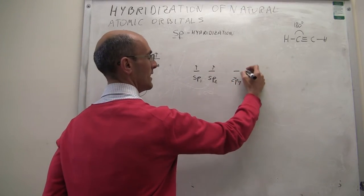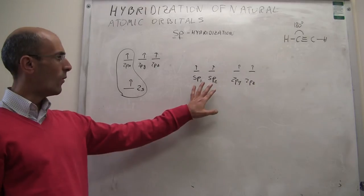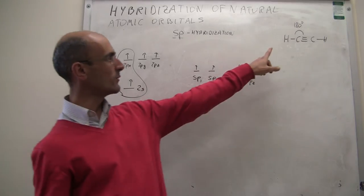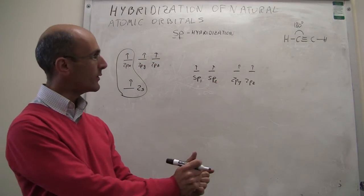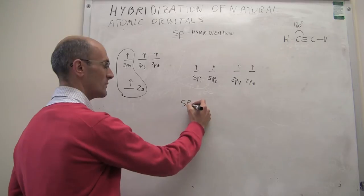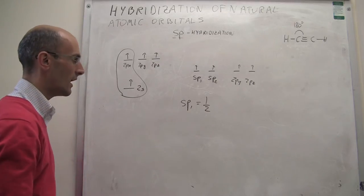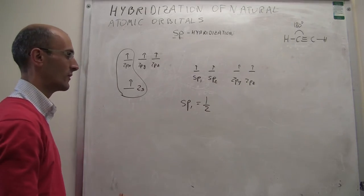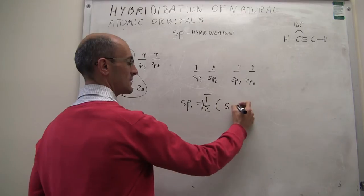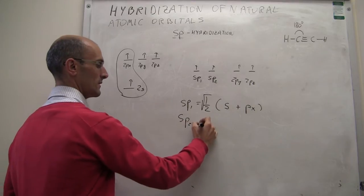The two remaining 2p orbitals have not hybridized and each one has just one electron. The question is: how do the combinations between the 2s and 2px orbitals have to be so that the angle between the hybrid orbitals is 180 degrees? The normalization constant — which is the square root of 1/2 — is not very important, but you get a first combination and a second combination, which you should have come up with on your own.